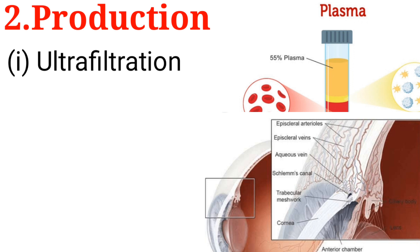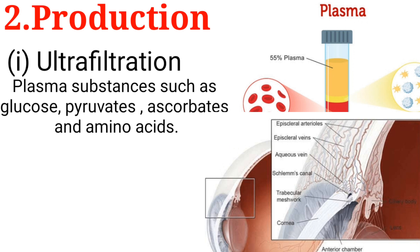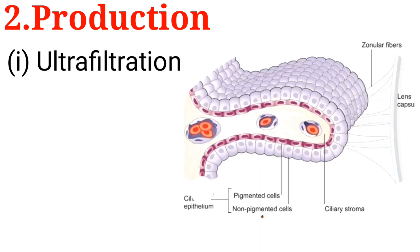Ultrafiltration. By ultrafiltration, plasma substances such as glucose, pyruvates, ascorbates, and amino acids pass out from the capillary walls and accumulate behind the non-pigmented epithelium of the ciliary process.